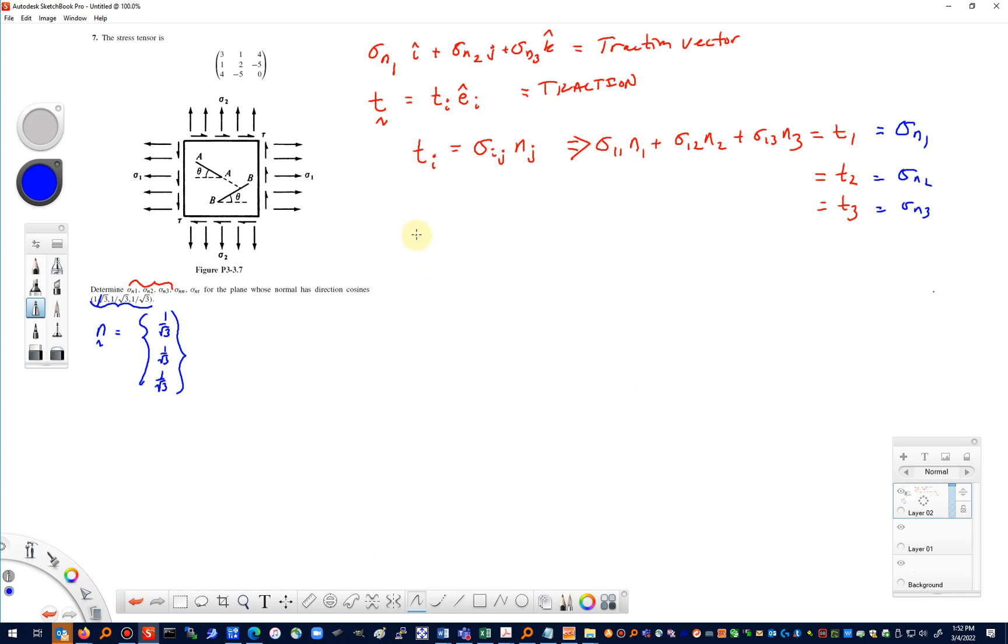I could say that the traction vector is equal to the stress tensor operating on a unit normal. So t is equal to σ·n. If I want the three components t_1, t_2, and t_3 of the traction vector, all I would do is a matrix multiplication of my stress tensor times the unit normal.